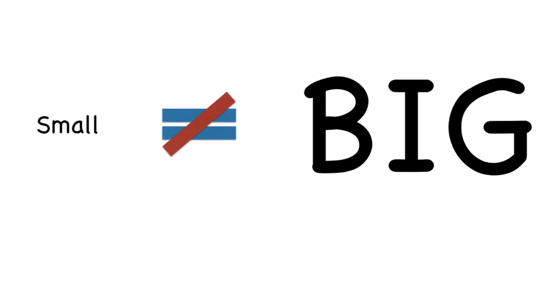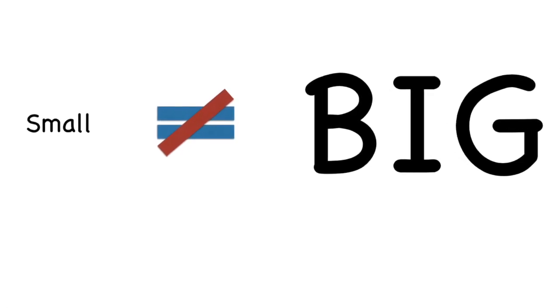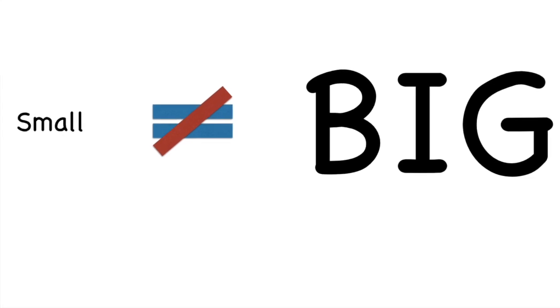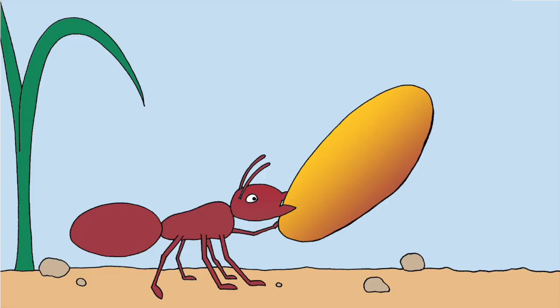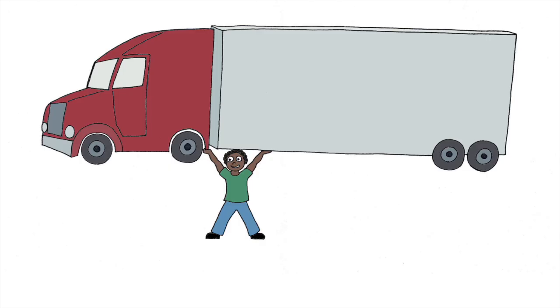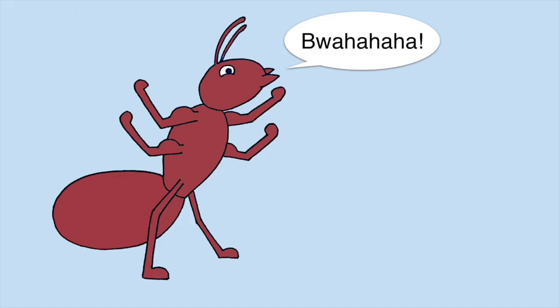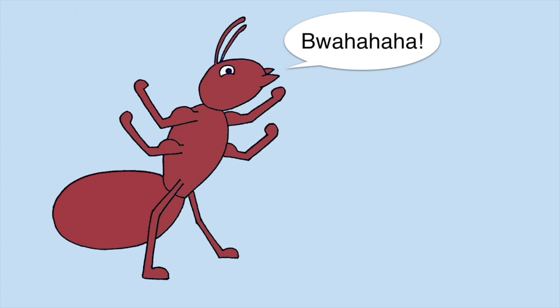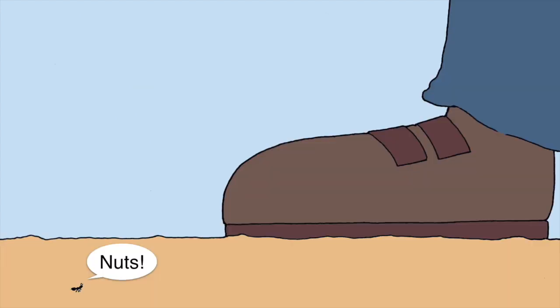To understand why this works you need to realize that small spaces do not function the same way as big spaces. This is something we know intuitively. We're not surprised when ants carry seeds that are a hundred times heavier than they are, but we would be very surprised if a person carried a fully loaded semi truck. It's not possible. Are ants stronger than humans? No, they're smaller.